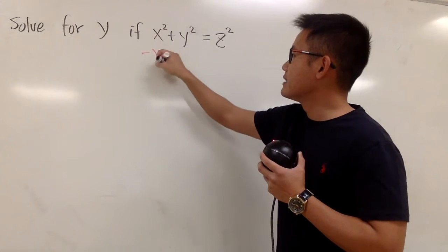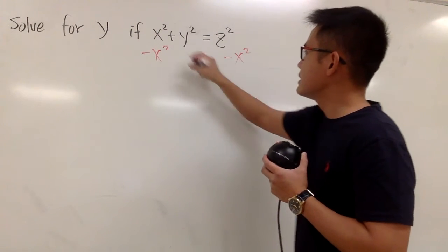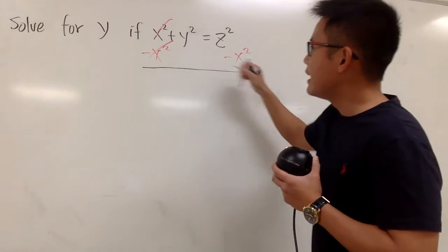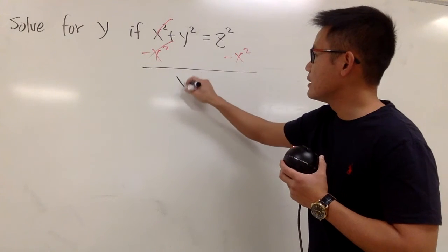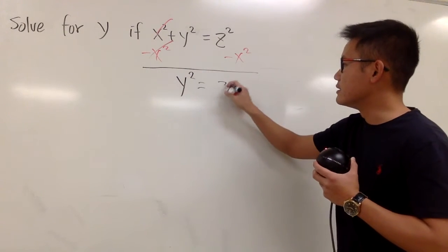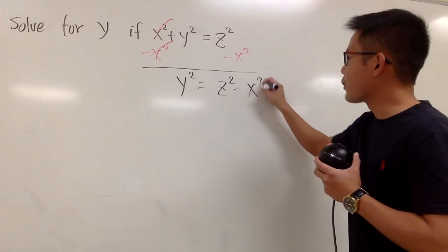Let's go ahead, minus x squared on both sides, so they cancel. And then we have this part with the y, so that's y squared. And then this is z squared minus x squared, like that.